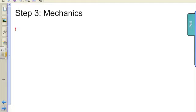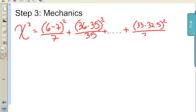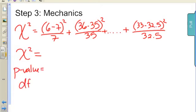So I'm ready to move on to the mechanics. So I'll just remind you, we do have to show our work for chi-square. I might do something like, oh, 6 minus 7 squared over 7 plus, and then I show another one, 36 minus 35 squared over 35 plus, and then I might do some dot dot dot dot, and finally I do the 33 minus 32.5 squared over 32.5. Alright, so I've shown my work. I'm not actually going to bother plugging those all in the calculator. I could, but I've shown my work. I'm going to get the final chi-square, the p-value, and the degrees of freedom from my calculator.